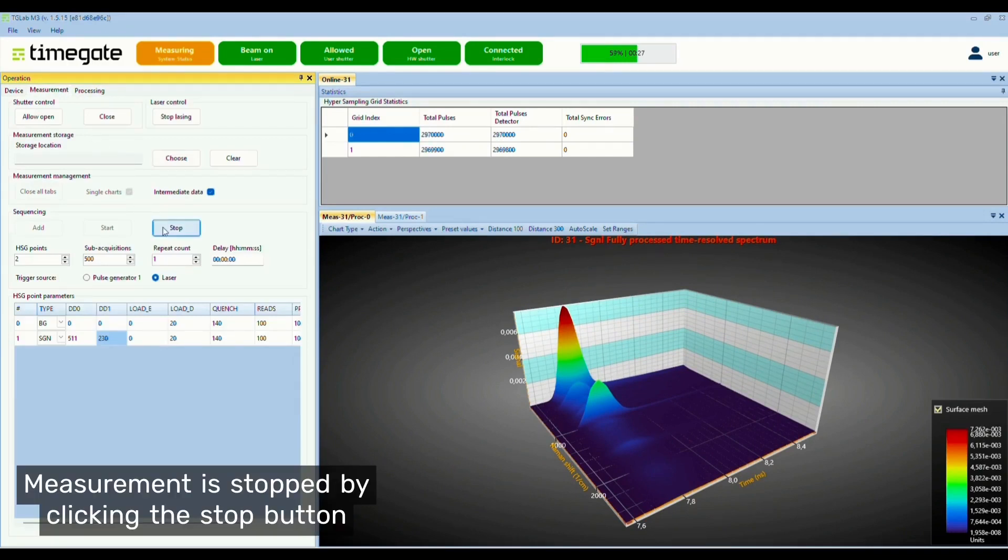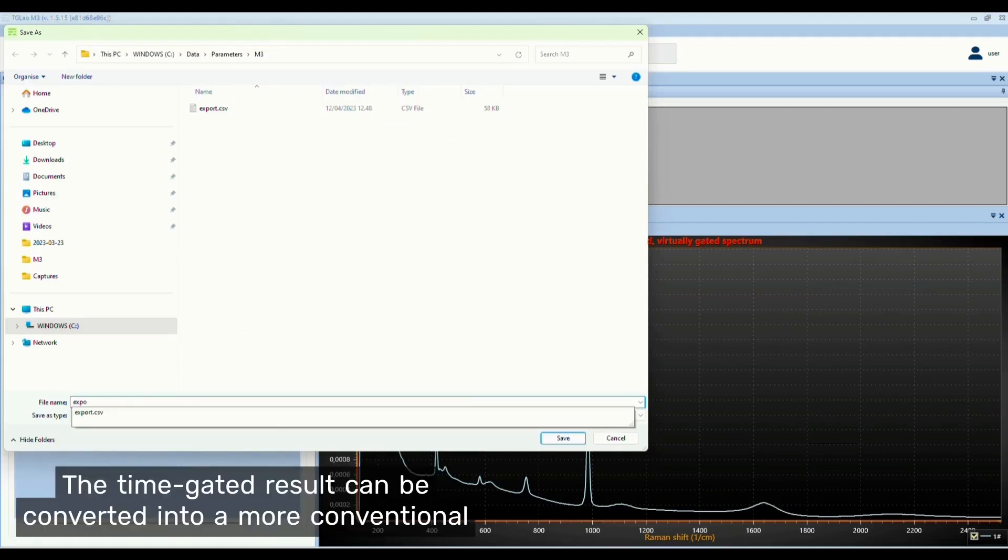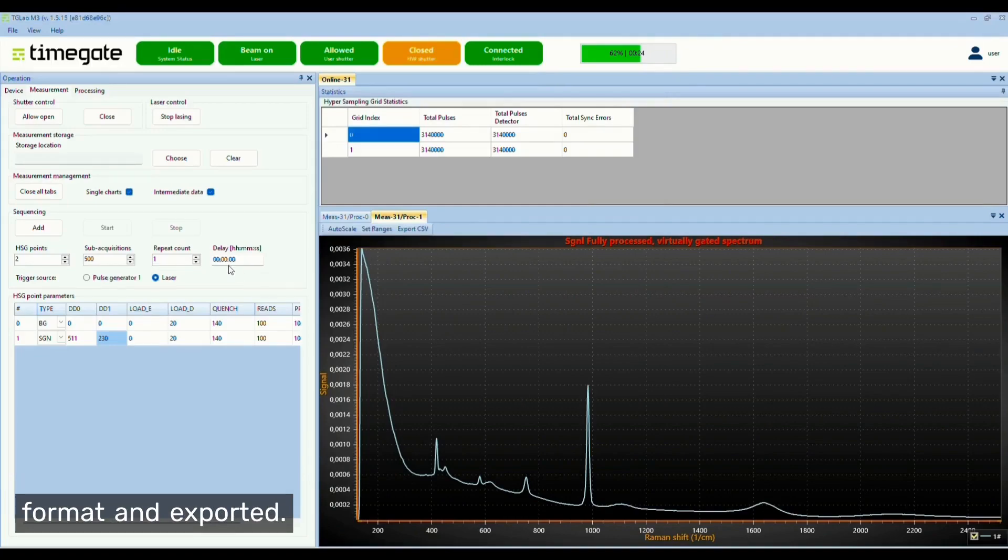Measurement is stopped by clicking the stop button or by waiting for the measurement to end. The time-gated result can be converted into a more conventional format and exported.